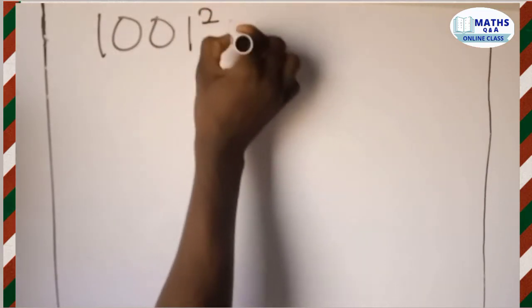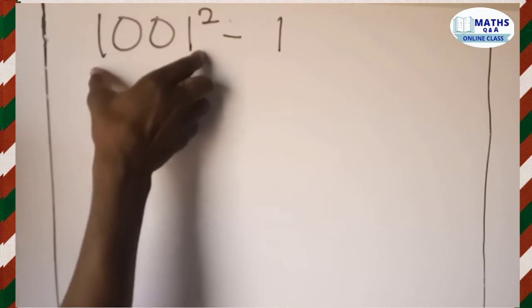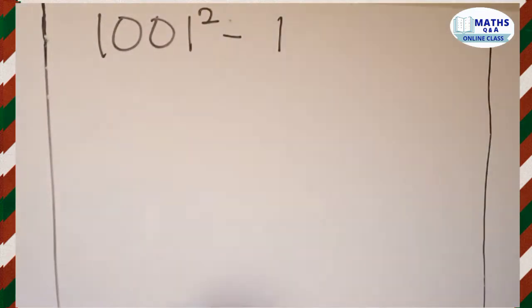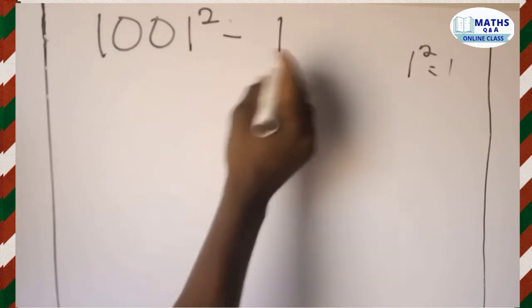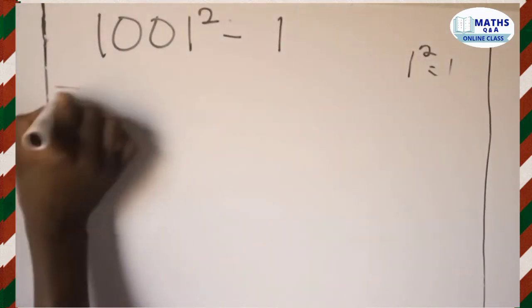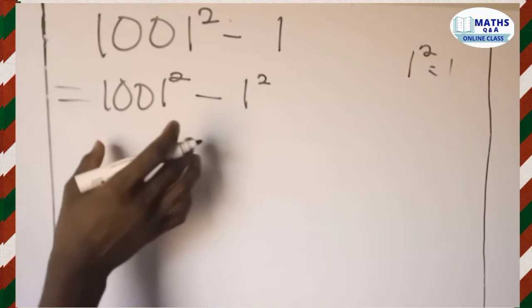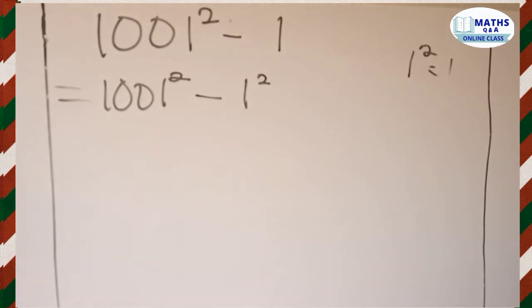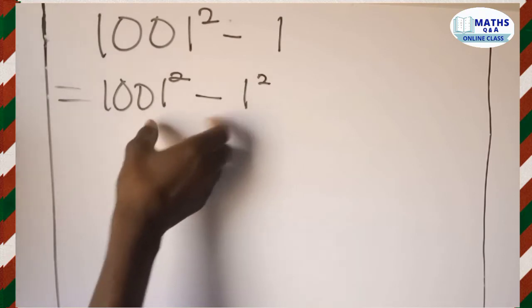We are given 1001 squared minus 1 and we have to evaluate this expression. The first thing to know is that this 1 is a square number — 1 squared is still 1. So this 1 can be rewritten as 1 squared. Now we have 1001 squared minus 1 squared, and they are both square numbers.